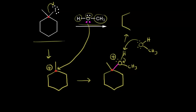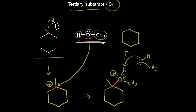Drawing our final product: we have our ring, a methyl group, an oxygen, and another methyl group — two lone pairs of electrons on the oxygen. These electrons come off onto the oxygen to form our final product. Notice that for our final product, we don't have any chiral centers to worry about, so we don't need to worry about specifying any stereochemistry.